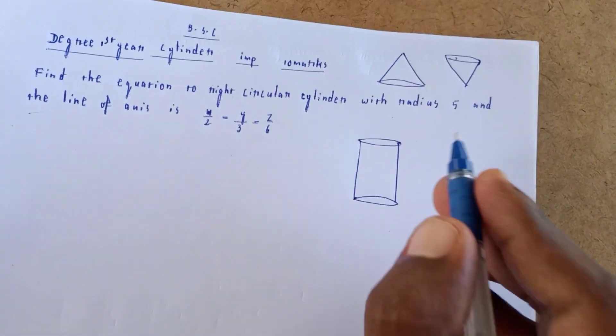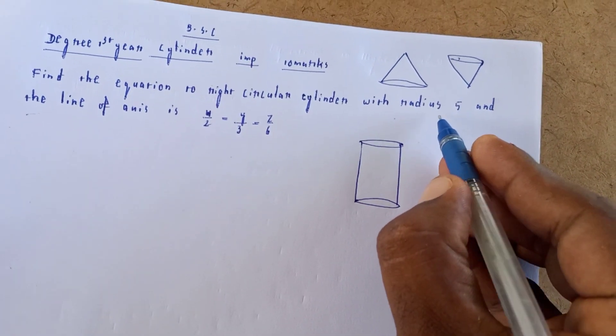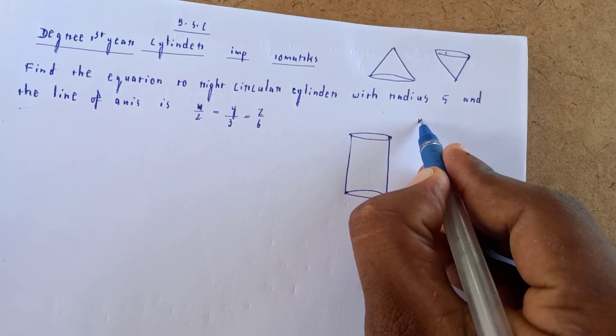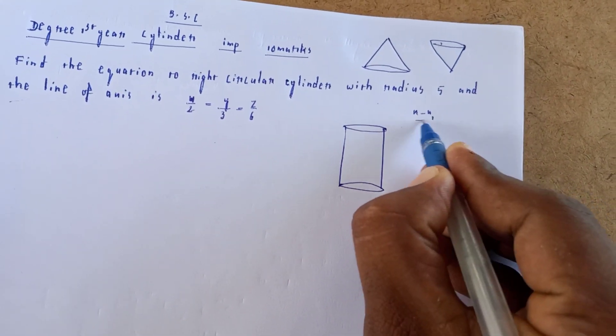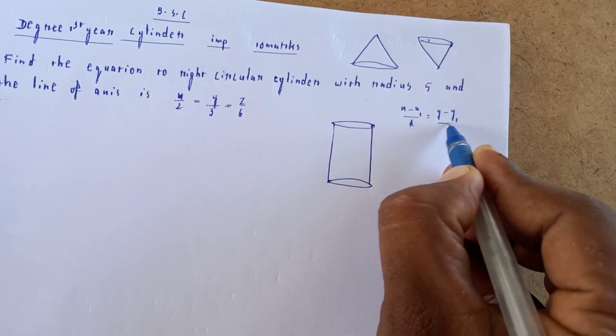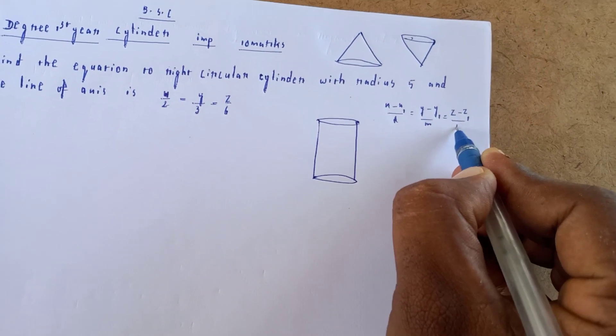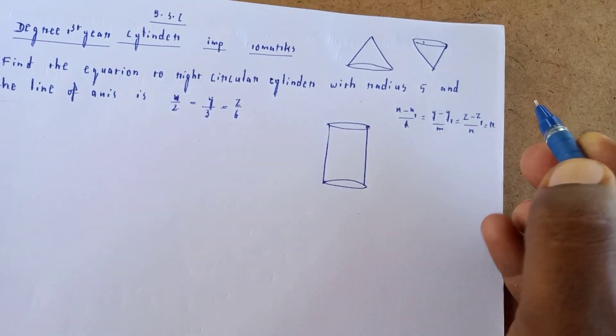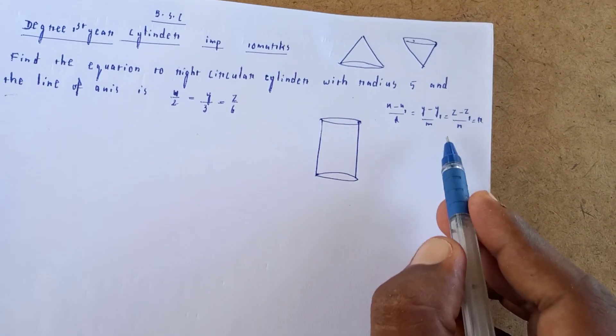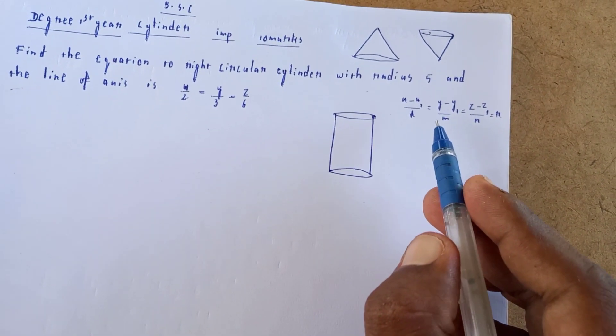For cone equations, first find the generator of the cone. The formula is (x - x₁)/L = (y - y₁)/M = (z - z₁)/N = r. These are the elements for the equation of generators.